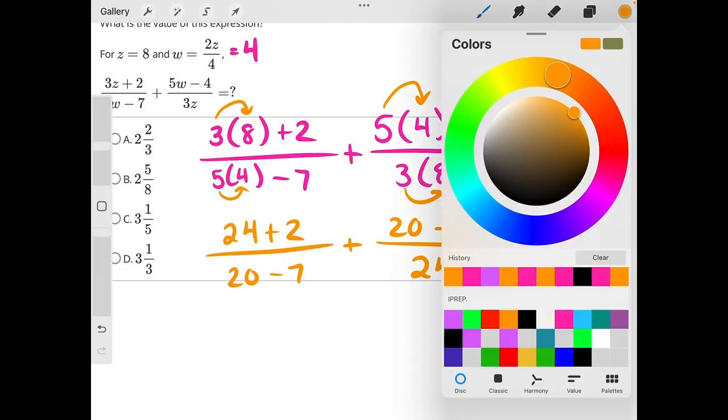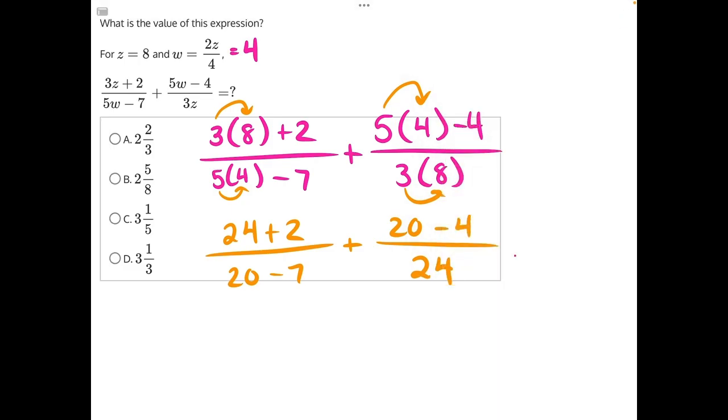Now let's do addition and subtraction to simplify. We have 24 plus 2, which will give us 26, over 20 minus 7, which is 13, plus 20 minus 4, which is 16, over 24.